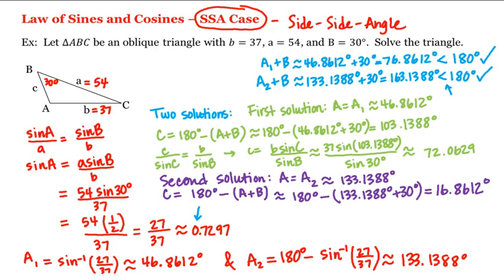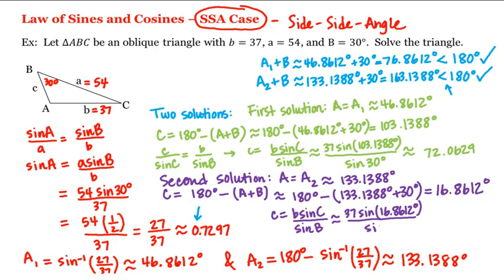Again, we can use the law of sines to find little c. That is, c equals b times sine of capital C divided by sine of capital B, which is approximately 37 times sine of 16.8612 degrees divided by sine of 30 degrees.